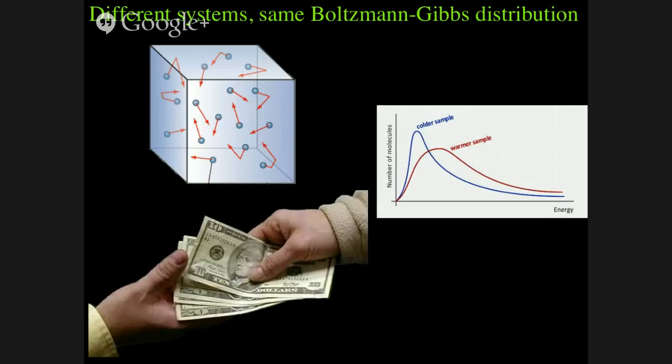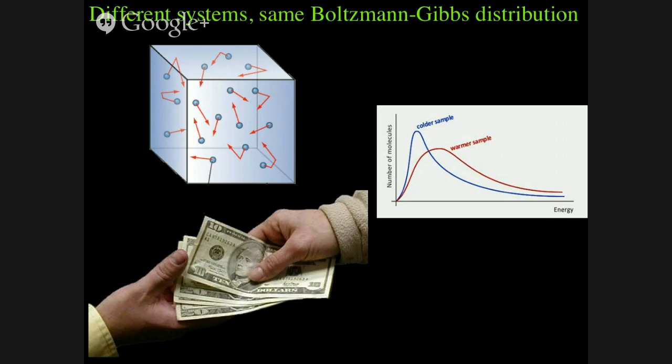In ideal gas systems with molecules bouncing around, there's actually the same underlying Boltzmann-Gibbs distribution of kinetic energies as in simple economies with random exchange of money. We're interested in how to teach those kinds of principles, particularly in a way that gets people to transfer them — learning about positive feedback systems and seeing whether it helps in understanding global warming.